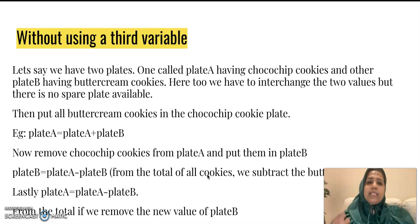Now let's have a look at how to do it without using a third variable. For this, we again think of a similar kind of a scenario, but now instead of liquids, we have two plates. So one plate is having chocolate chip cookies and the other plate is having buttercream cookies. What we have to do is interchange the contents of the two plates without getting a third plate. How do we do this? Very simple.